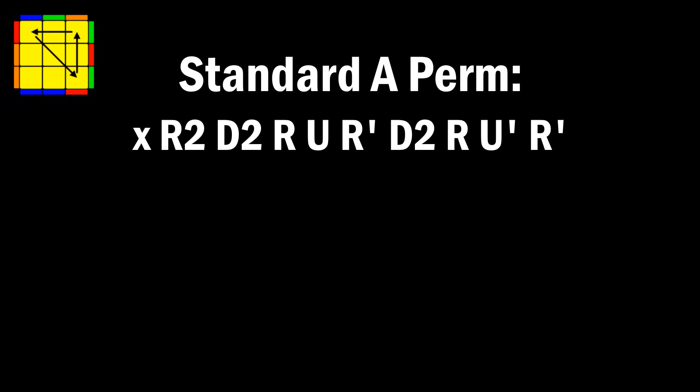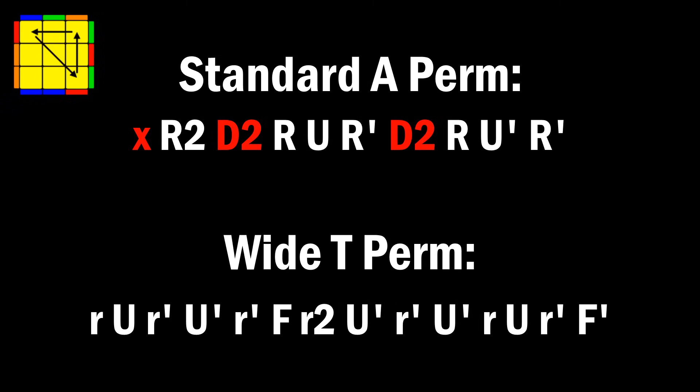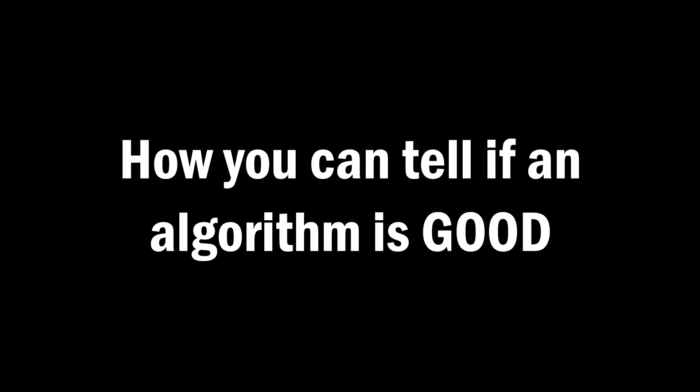People learning A perm for the first time see the X rotation and see the D2 moves, and those together make it look like a bad algorithm where a T perm is something you know is a good algorithm. So today, we'll be talking about how you can tell if an algorithm is good. I've developed a formula where you can plug in a few things about the algorithm, and it will tell you how good this algorithm is.